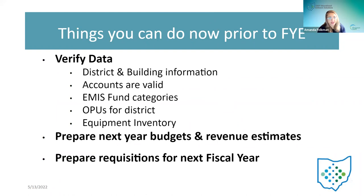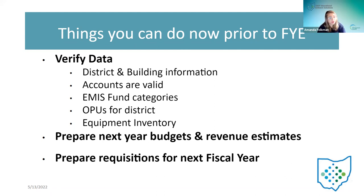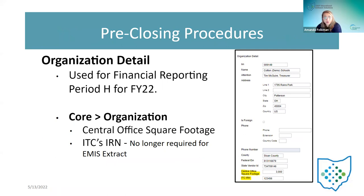Now here are the things within the system — these are on the checklist for pre-closing procedures. The first step is verifying data: district and building information, account validity, EMIS fund change categories, and operational units. We'll also touch on preparing next year budgets, revenues, and requisitions for next year. Inventory will be covered separately next week.